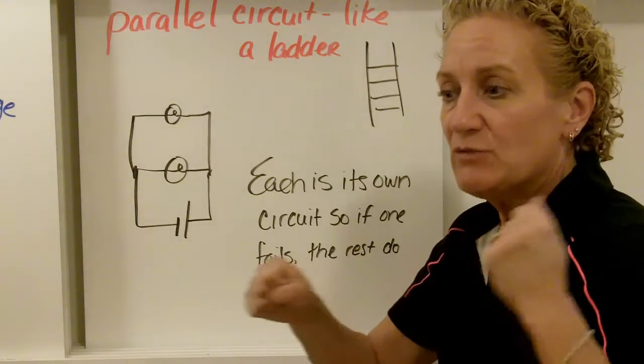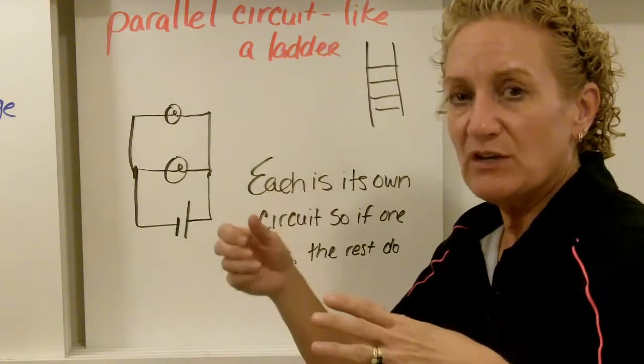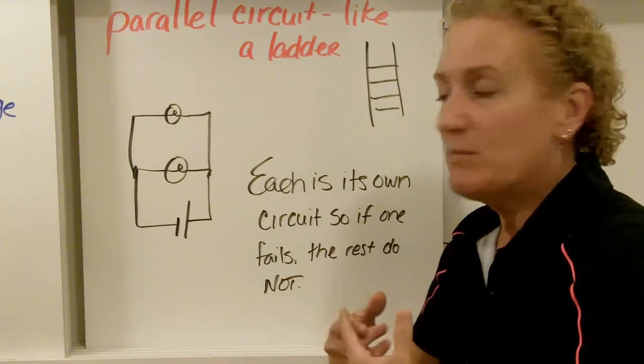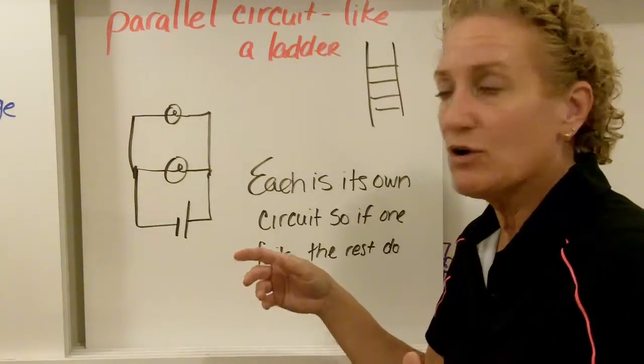It used to be Christmas lights were always in series. Christmas tree, you know, the lights that you put on your tree. So when one of them died, they all would die. Now most of them are in parallel where you'll see if one of them dies, the rest of them still work.